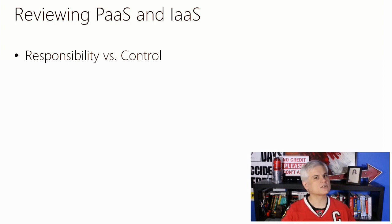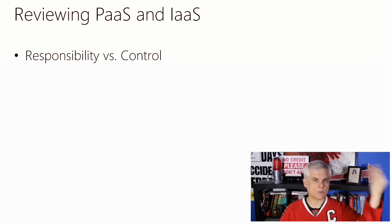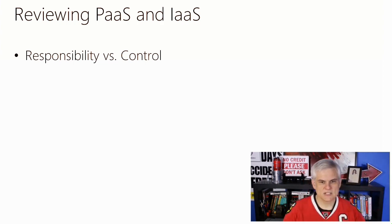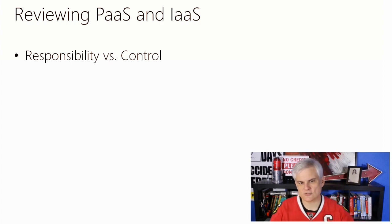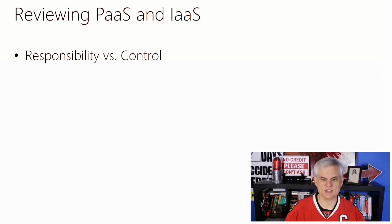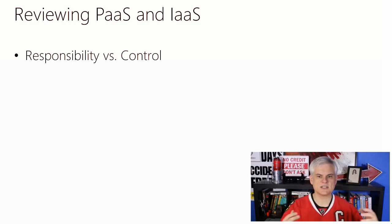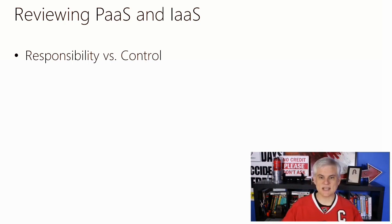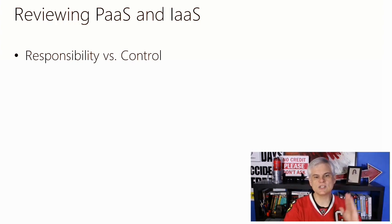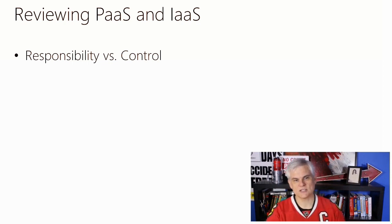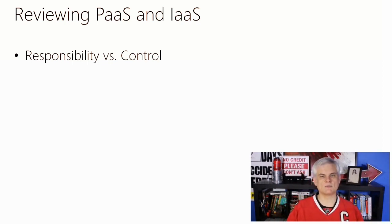For example, we couldn't install some custom third-party software on that computer hosting our website because we didn't have control of the environment. On the other end of the spectrum, we could always opt for an infrastructure-as-a-service offering like Azure Virtual Machines, and that will give us total control over the operating system configuration, disk persistence, what software we can install on the server, and so on. Of course, that comes at a price — we're responsible for server software installation, configuration, security patches, and any other updates as well. It's that balance between responsibility and control.